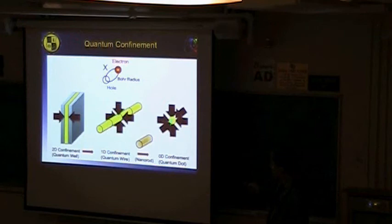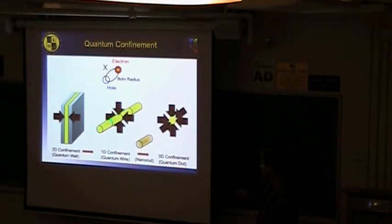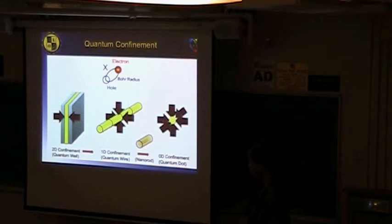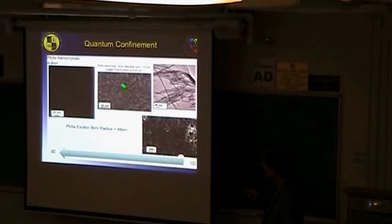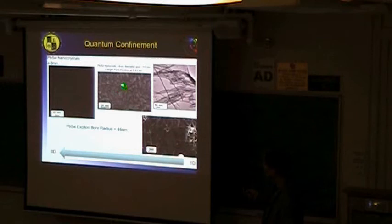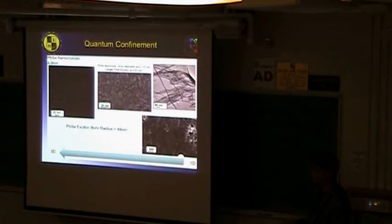In real life, here are examples of lead selenide nanocrystals — the small circles — and nanorods that are nearly three-dimensional, and then nanowires with micron lengths that are free to move in one direction but confined in the other. The Bohr radius for lead selenide is 46 nanometers, so any structure smaller than 46 nm shows confinement. Making them bigger than 46 nm eliminates the confinement effect.